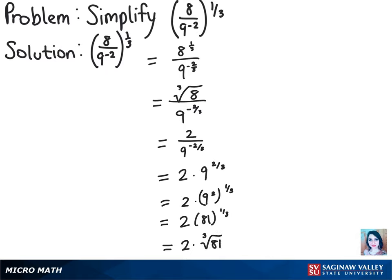And then once we simplify this a little bit more, we'll have 2 times 3 times the cubed root of 3. And then we're left with our final solution after multiplying the 2 and 3, and that is 6 times the cubed root of 3.